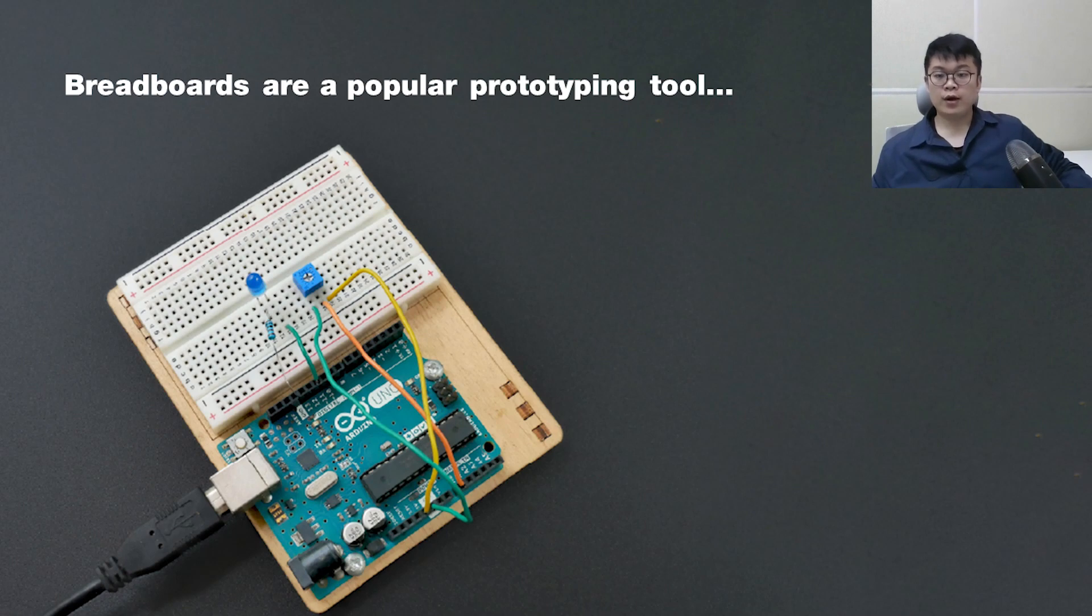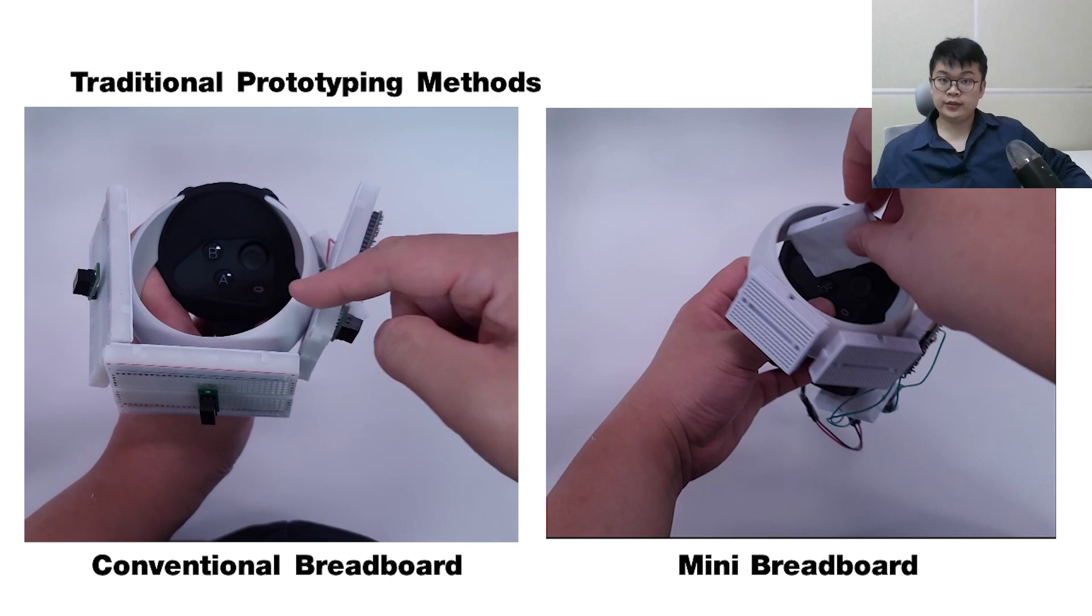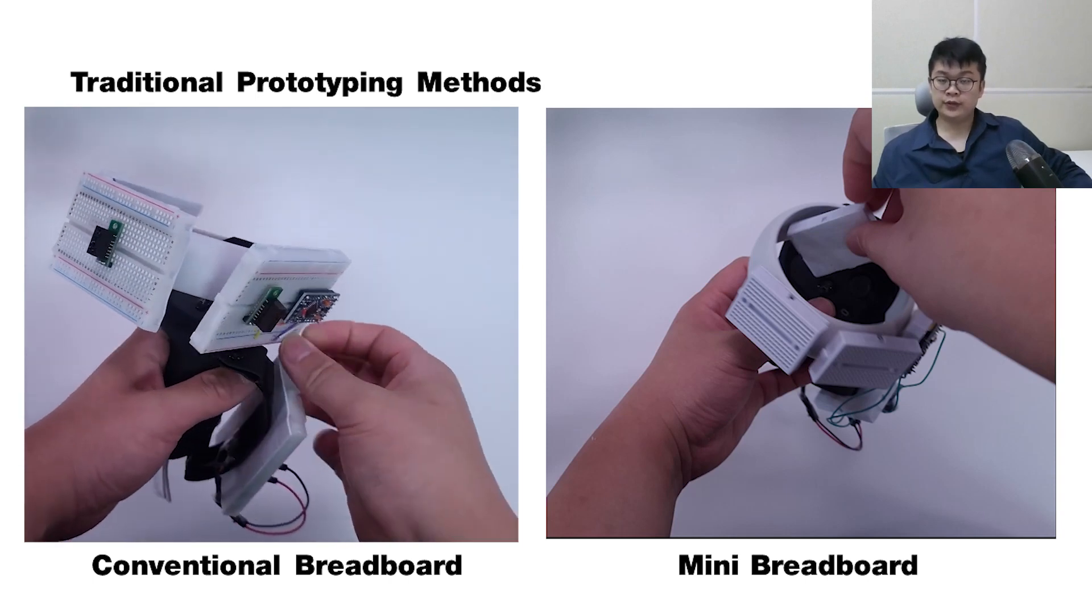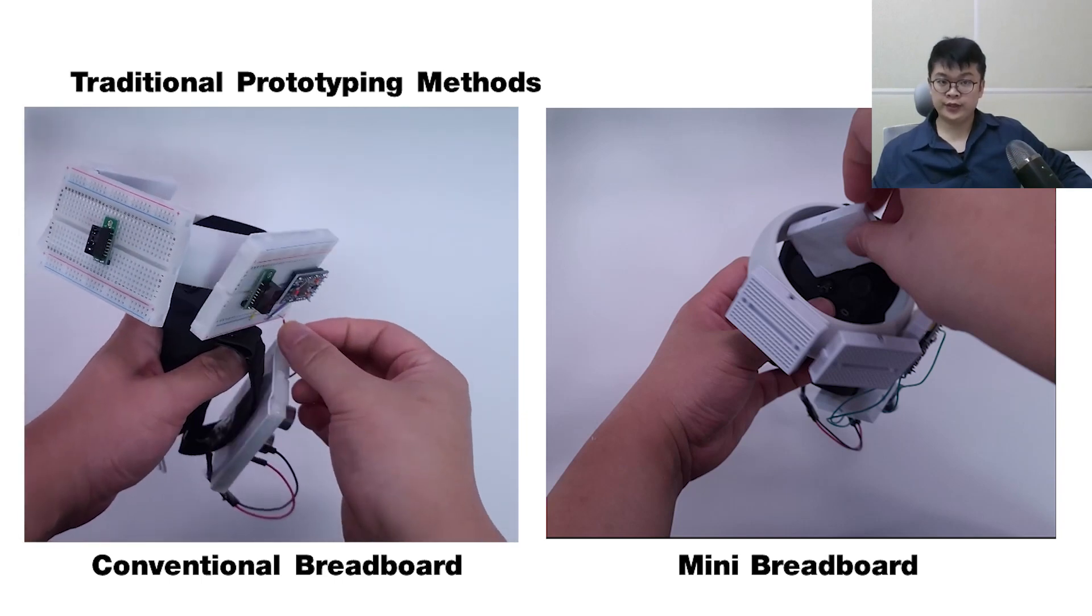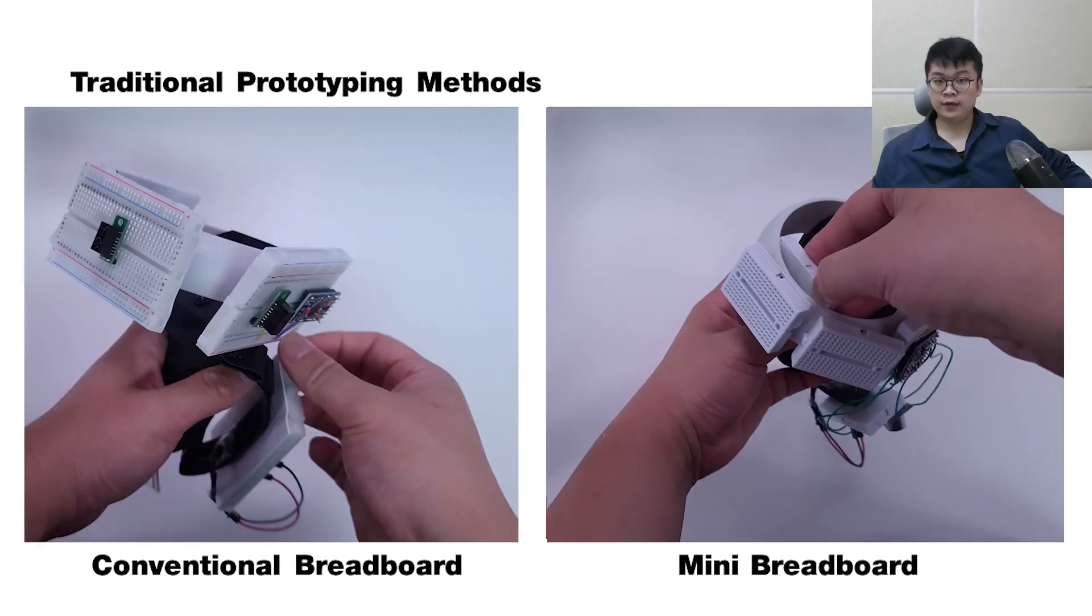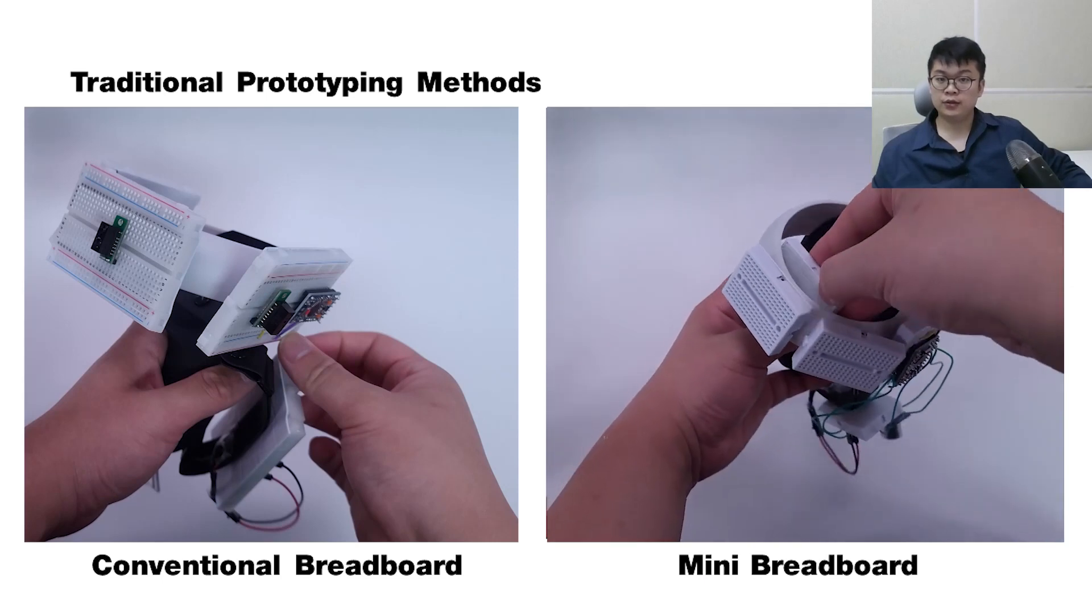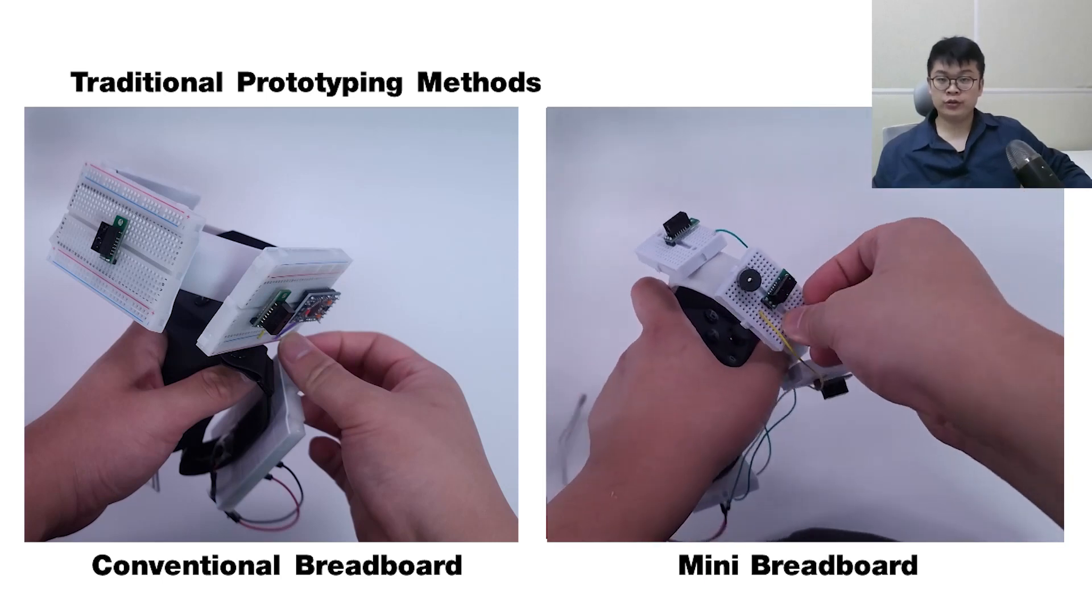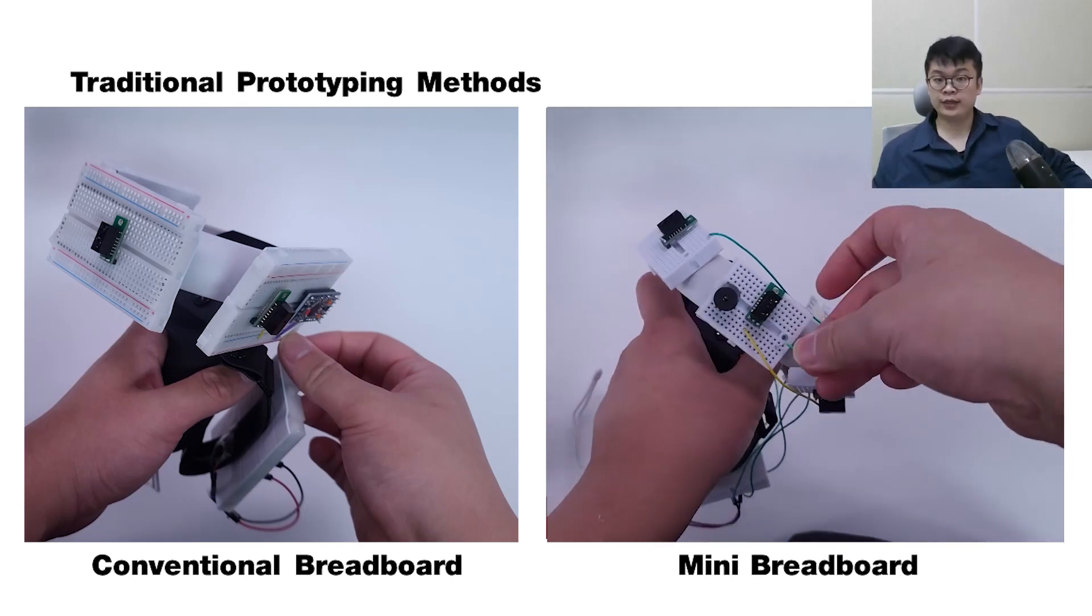A popular prototyping platform for prototyping circuits is the breadboard. While it lets users quickly change circuits, it is not well suited for interaction prototyping. Since it is rigid, it is difficult to attach to curved geometries. Mounting components also do not follow the curvature of the object geometry as the breadboard is flat and rigid. Alternatively, makers can use smaller breadboards which improves mounting components, but still has limitations, especially when mounting mini breadboards on inward-bent geometry as we can see in this example.